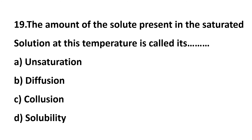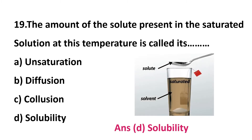Question 19: the amount of solute present in a saturated solution at a given temperature is called its — option A: unsaturation, option B: diffusion, option C: collusion, option D: solubility. The answer is option D: solubility. The amount of solute that can dissolve in a particular solvent is known as solubility.